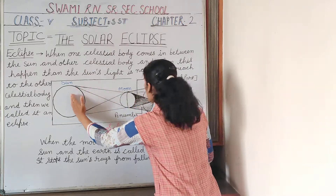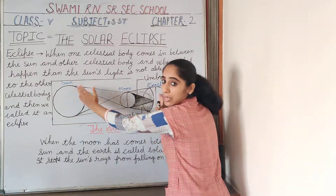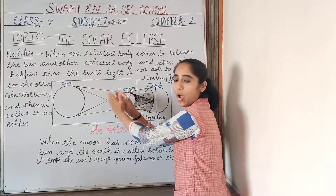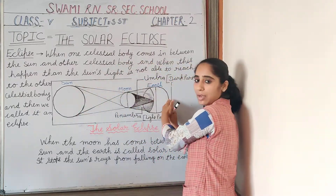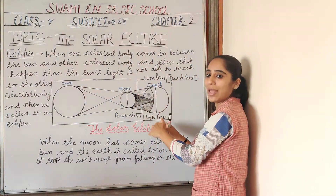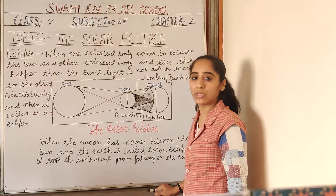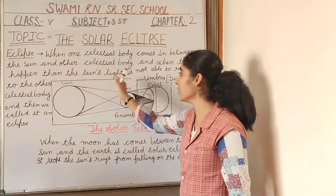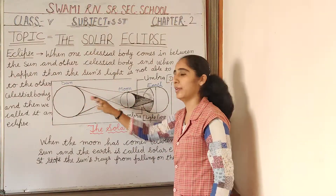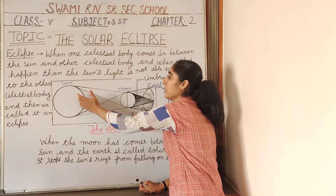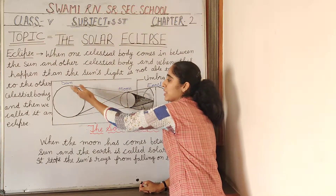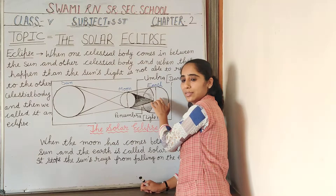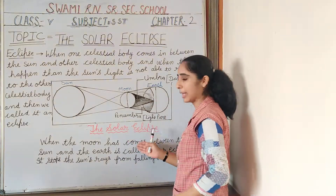When the moon comes between the sun and the earth, and the moon stops the sun rays falling on the earth, it is called a solar eclipse. The moon comes in the way of the sun and stops the sun rays falling on the earth, then the eclipse happens.